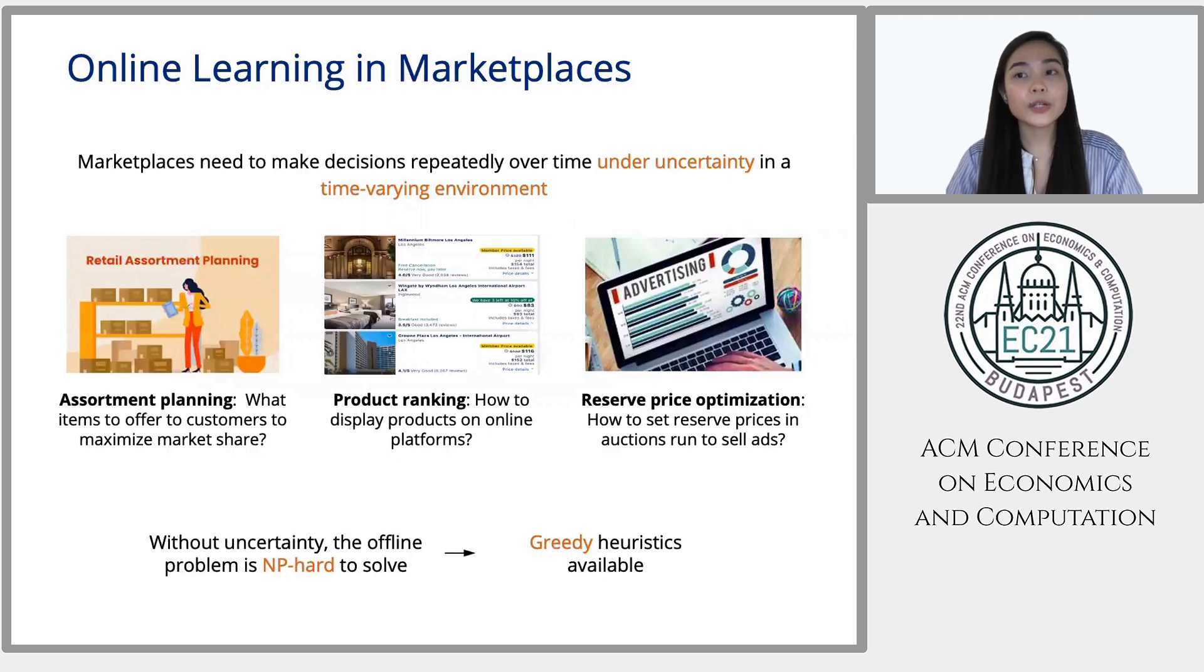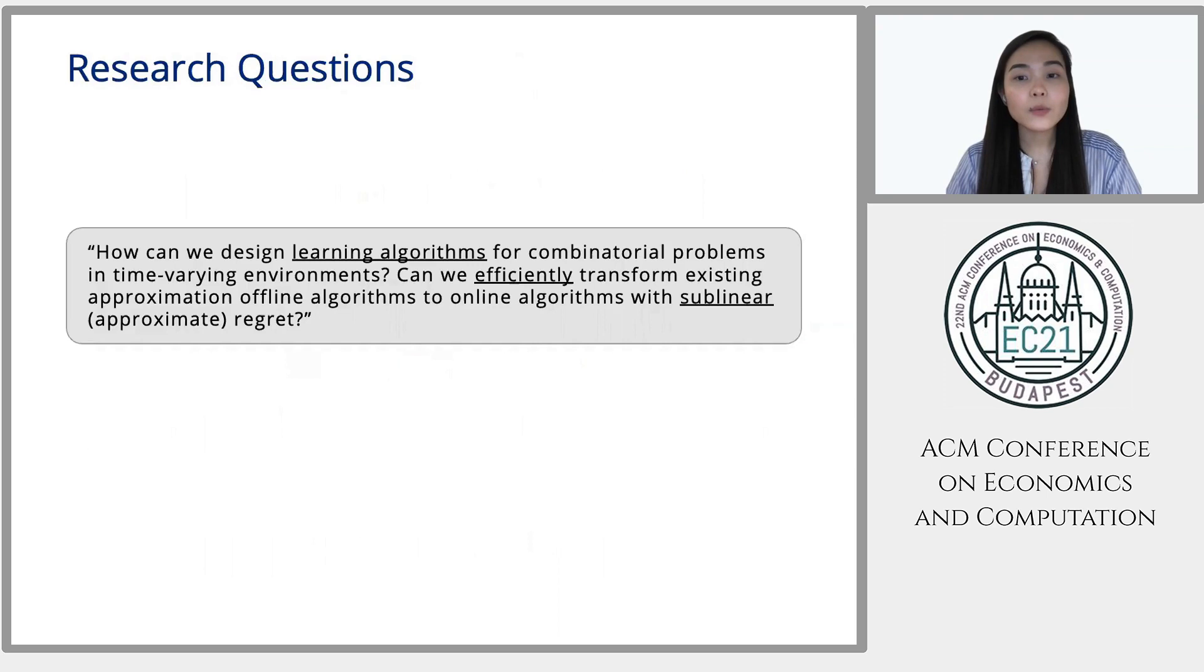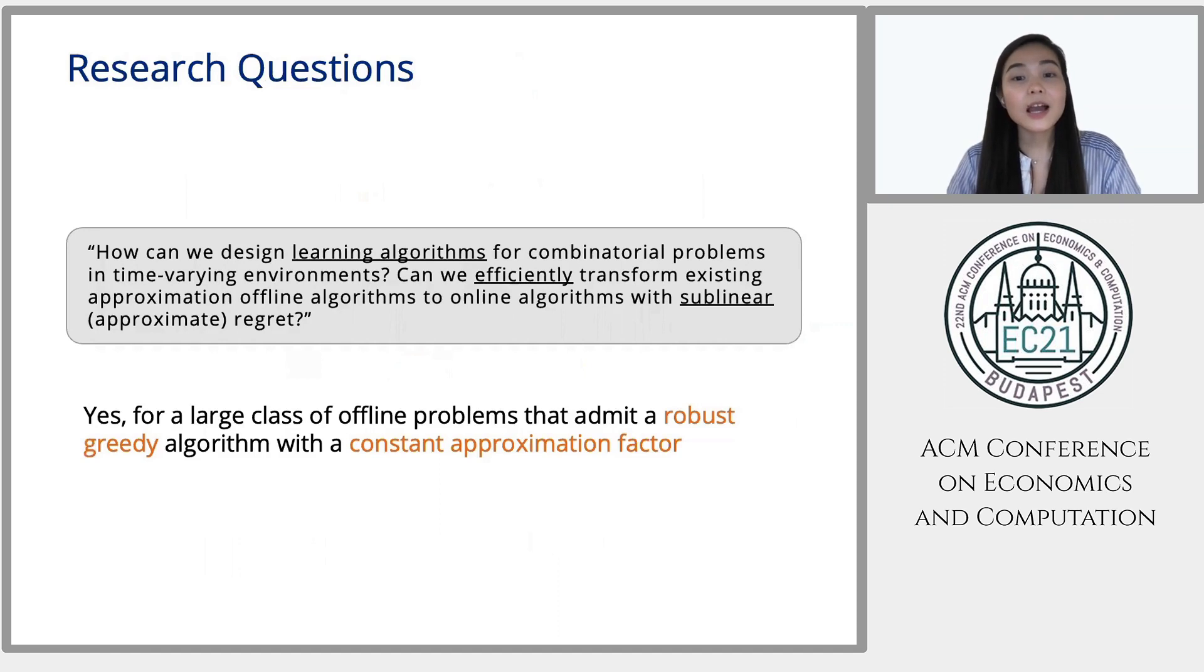Now, going to our research question, we want to investigate, how can we design learning algorithms for such combinatorial problems? Can we efficiently transform existing approximation offline algorithms to their online counterparts, such that we maintain the approximation factor and we get sublinear regret? And the answer is yes. Yes, we can. If not, this paper would not have any results. But yeah, we can do so for a large class of offline problems that admit a robust greedy algorithm with a constant approximation factor. So all of the combinatorial examples that I mentioned before actually have this property.